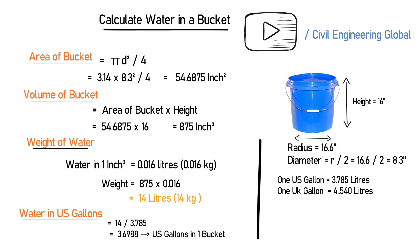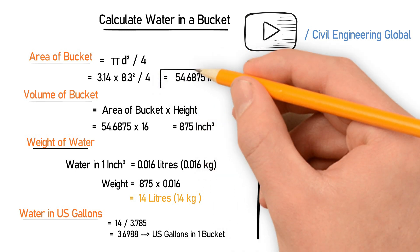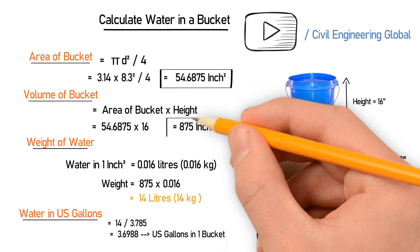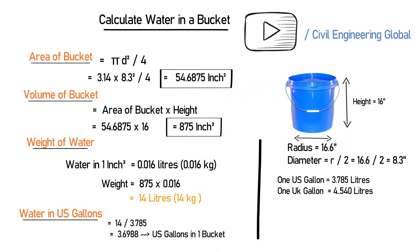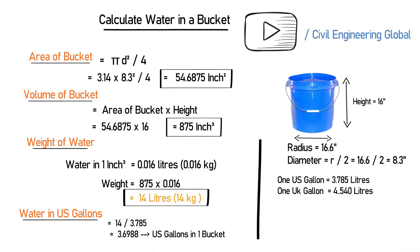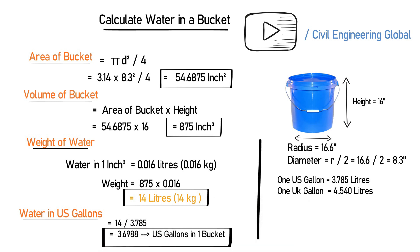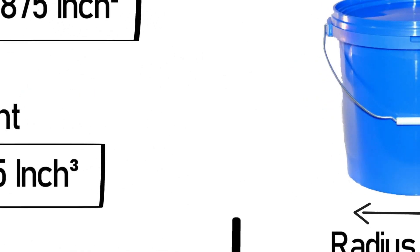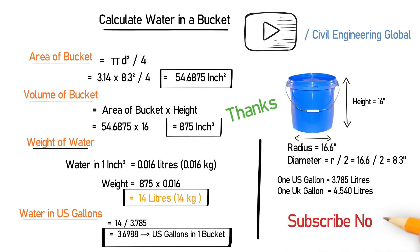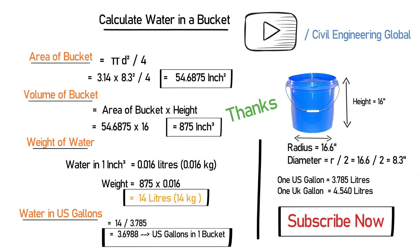In this video we have calculated the area of the bucket, the volume of an ordinary bucket, the weight of water in liters and also in kilograms, and we converted that into US gallons. I hope you have liked this video and found it helpful. Thank you so much for watching — if you want to watch more calculation videos, subscribe now.